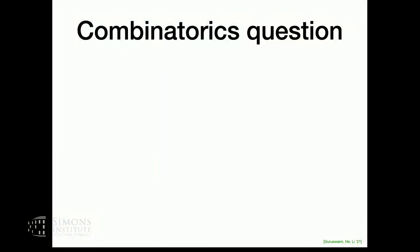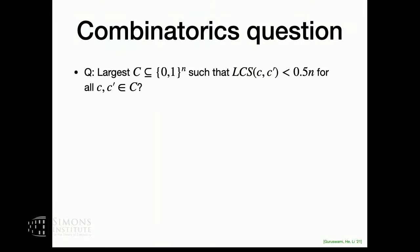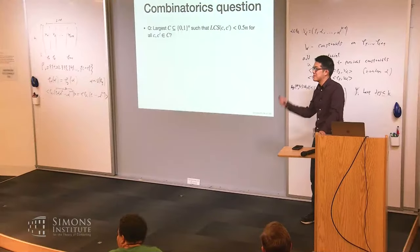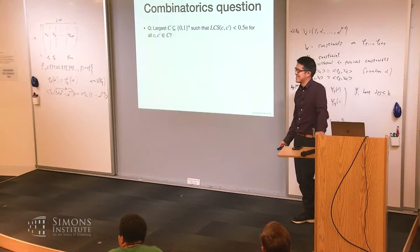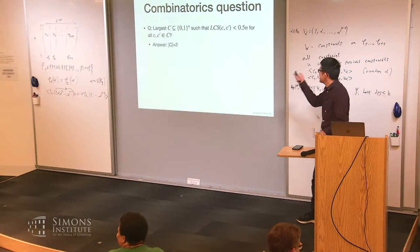I'm going to start with a combinatorics question — if you've seen this before, don't say anything. We're going to start with a warm-up question, which I promise you is easy. What is the largest set of binary strings we can find such that the LCS between any two is at most n over two? So we want a large set of binary strings such that any two are far apart, in that they have small longest common subsequence. Any guesses? Is it two?